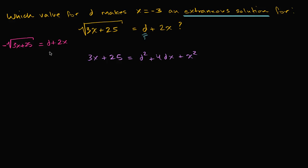So both of them, when you square both sides, get us to the same quadratic. And when you solve this quadratic — rearranging it into standard form — you'll get two solutions. It turns out one of the solutions is going to be for the original (yellow) equation, and one of the solutions is going to be for the negative (purple) equation. The solution that belongs to the purple equation is going to be an extraneous solution for the yellow equation — it's actually not going to be a solution for the yellow equation.